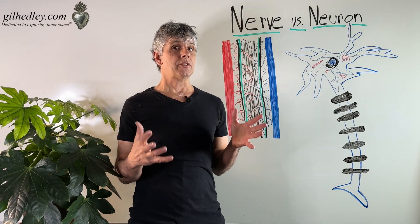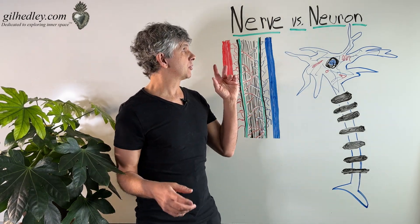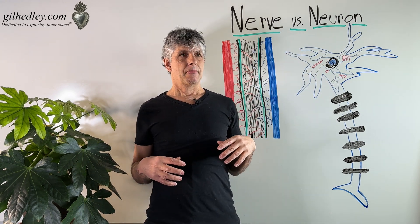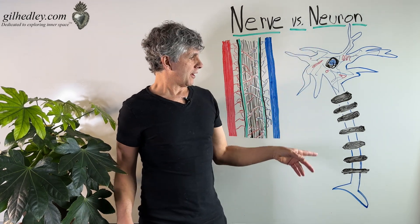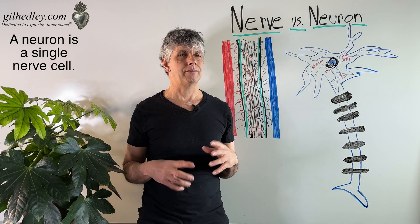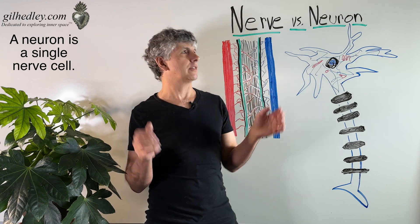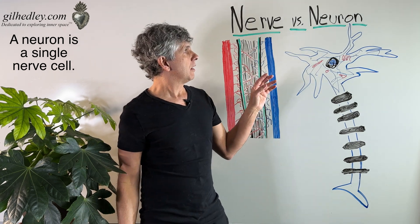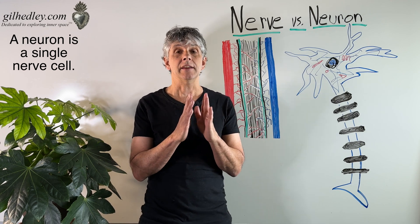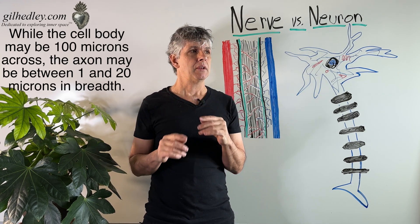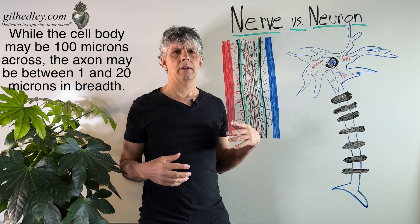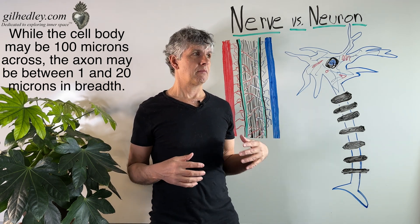Let's talk for a few minutes about the difference between a nerve and a neuron. Let's start with a neuron. A neuron is a single nerve cell. We have billions and billions of nerve cells in our bodies, but one nerve cell is very tiny in breadth. So a nerve cell can be anywhere from, say, 1 to 20 microns.